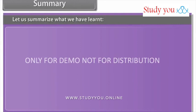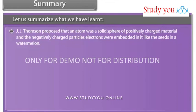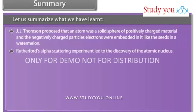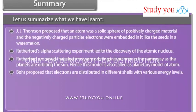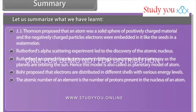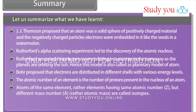Summary. Let us summarize what we have learned. J.J. Thomson proposed that an atom was a solid sphere of positively charged material and the negatively charged particles' electrons were embedded in it like the seeds in a watermelon. Rutherford's alpha scattering experiment led to the discovery of the atomic nucleus. Rutherford proposed that electrons were orbiting in a manner in the same way as the planets are orbiting the sun. Hence, this model is also called the planetary model of atom. Bohr proposed that electrons are distributed in different shells with various energy levels. The atomic number of an element is the number of protons present in the nucleus of an atom. Atoms of the same element having same atomic number Z but different mass number A are called isotopes.